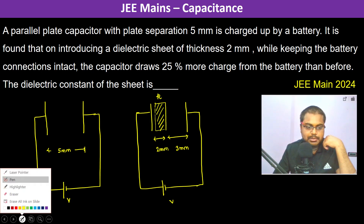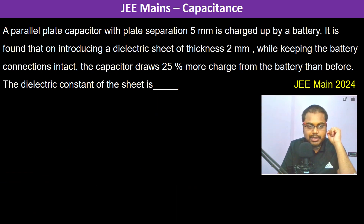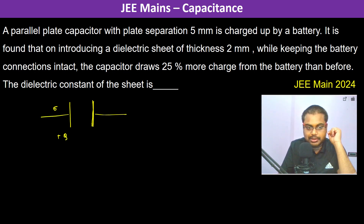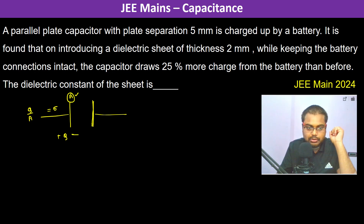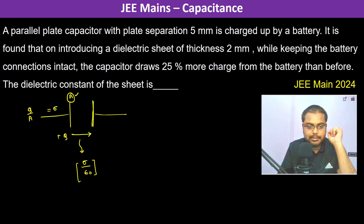Let's first review some theory about dielectrics. If the charge on the capacitor is plus Q and the surface charge density is Sigma equals Q divided by A, where A is the area of the plate, then the electric field inside the capacitor is equal to Sigma divided by epsilon naught.